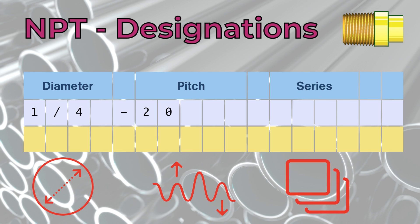After the pitch, and separated with a space, we have a three- or four-letter code representing the series. The first two letters are always NP, which stands for national pipe. The third letter can be either T for tapered or S for straight. And the fourth represents specific use cases.